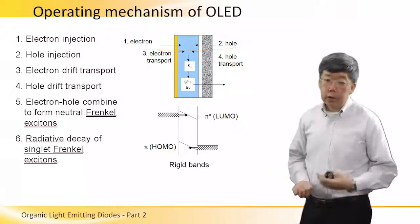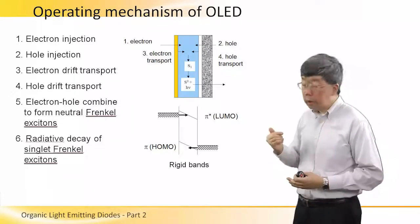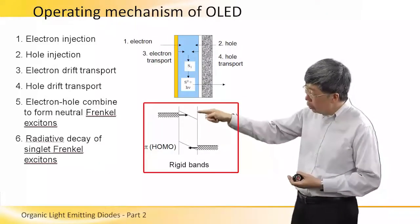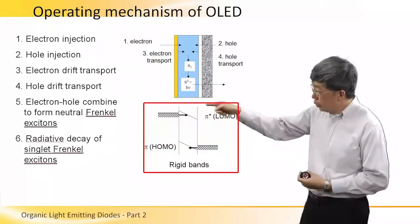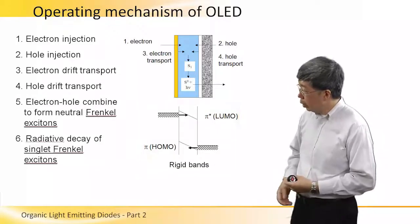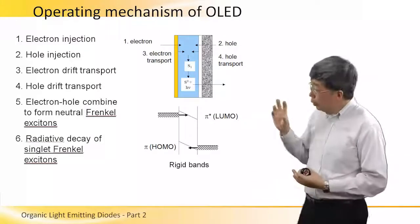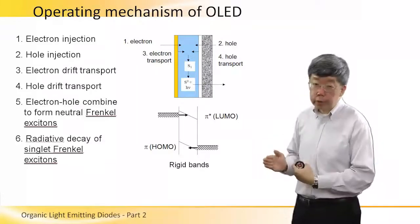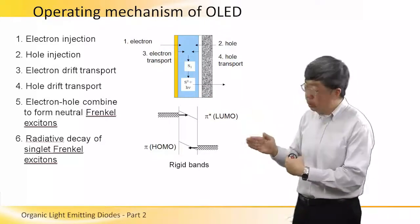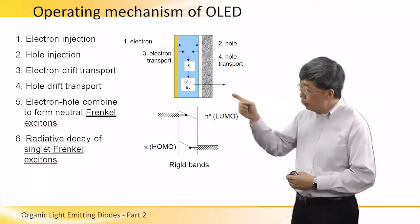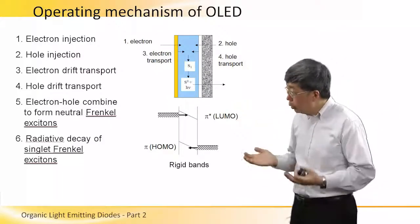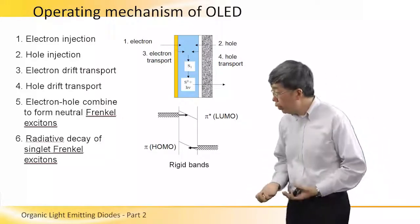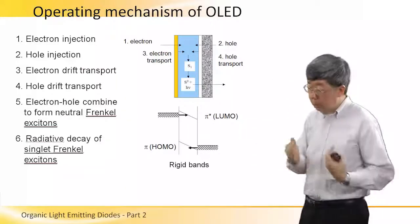Once inside the organic layer, the electron and the hole will experience an electric field. This is illustrated by the energy diagram below the schematic diagram of the device. By rigid bands, what we mean is that the organic layer behaves more or less like an insulator. And the tilted bands show that there is an electric field. As a result, both the electron and the hole undergo what is called drift transport — they are being pulled along by an electric field.